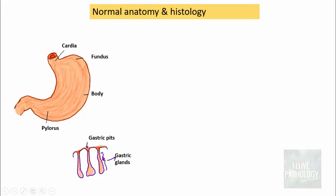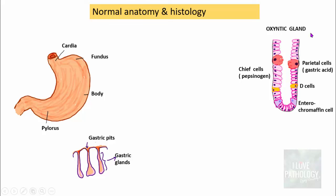Looking into the histology of the gastric glands in the fundus or body, which are mainly oxyntic glands — the important cells you see are the chief cells, which secrete digestive enzymes like pepsinogen; the parietal cells, which secrete gastric acid; and then D cells and enterochromaffin cells. D cells secrete somatostatin and enterochromaffin cells secrete atrial natriuretic peptide.